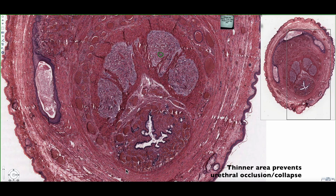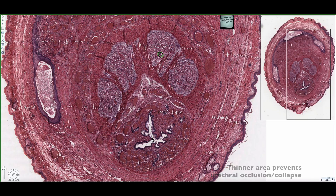If this layer were thicker around the corpus spongiosum, an increase in pressure due to all the blood infiltrating this region might occlude the penile urethra, which we don't want because it would obstruct the flow of seminal emissions. So with a thinner layer of tunica albuginea here, the increase in pressure moves outwards rather than inwards, which could otherwise occlude the penile urethra.